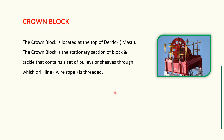I have kept the definition simple and understandable so you can gain good knowledge of rig equipment. The crown block is the stationary section of the block and tackle that contains a set of pulleys or sheaves through which the drill line is threaded. The drill line is threaded through the crown block sheaves.